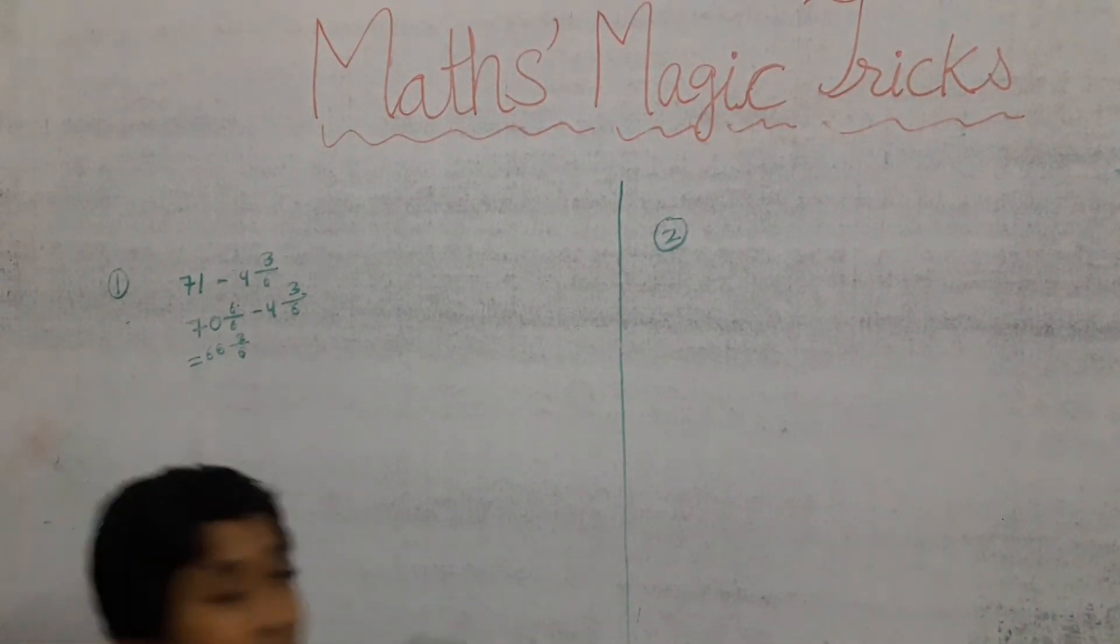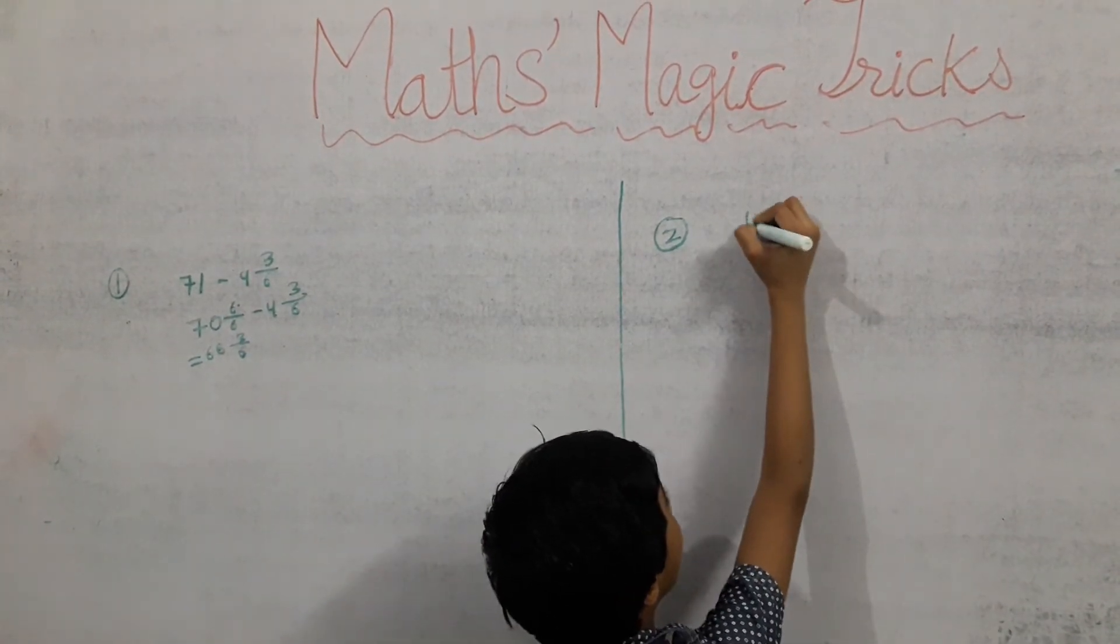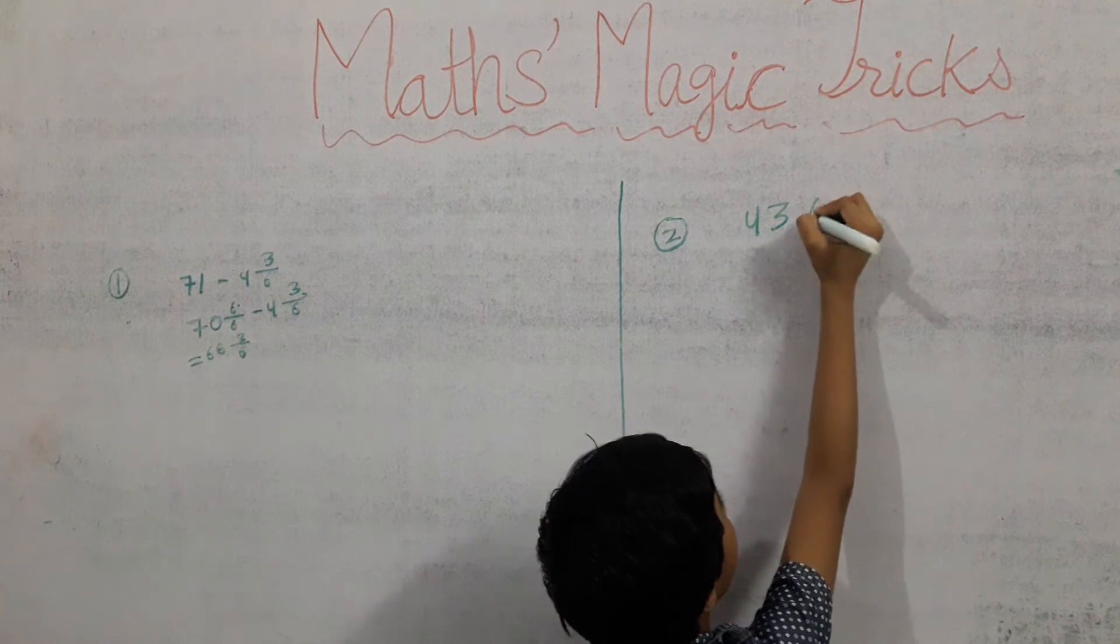Now next, we will take our number forty-three multiply twenty-one.